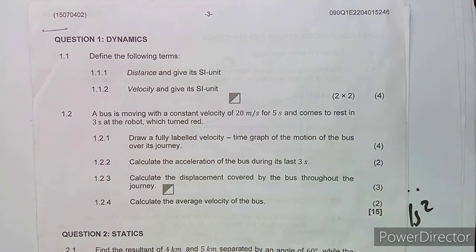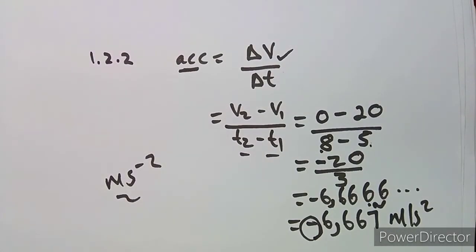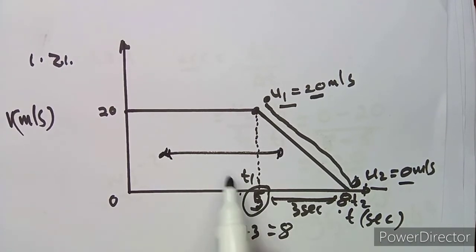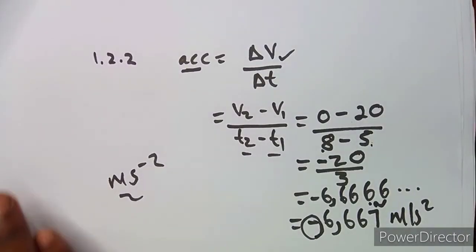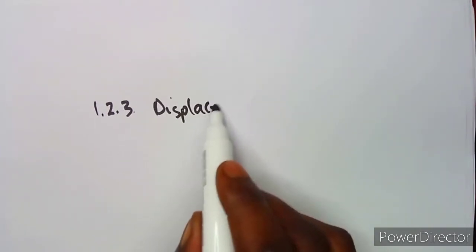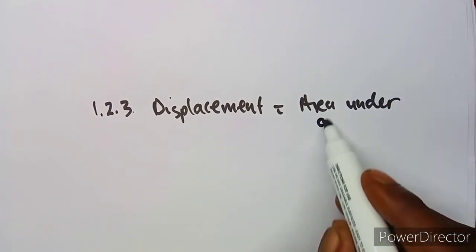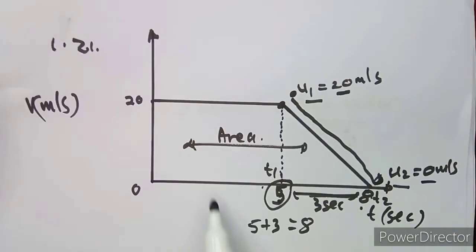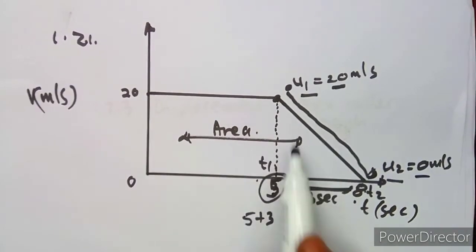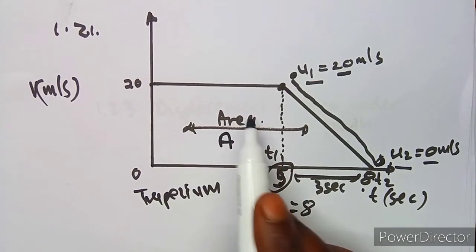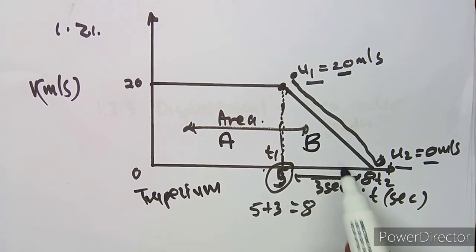Question 1.2.3: calculate the displacement covered by the bus throughout the journey. Remember, displacement throughout the journey is equal to the area under the velocity-time graph — the area below the curve. We have two options: use the whole shape as a trapezium, or separate it into a rectangle and a triangle.